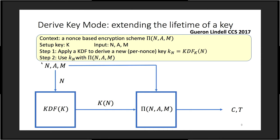The derived key mode is a way to extend the lifetime of a key. You have an encryption scheme that accepts a nonce, AAD, and a message, and you have a key. Instead of naively using the key, every nonce is passed through a KDF with some key. This KDF outputs a nonce-derived key for this session. Now you invoke the same scheme with this nonce, the same AAD, the same input, and with this derived key, and you get out the ciphertext.